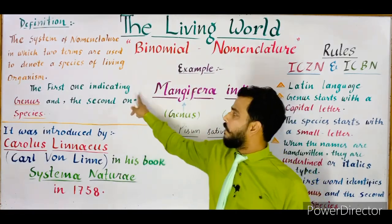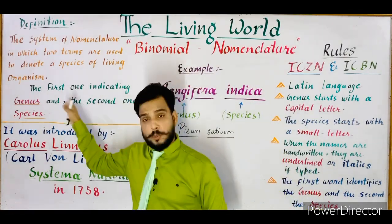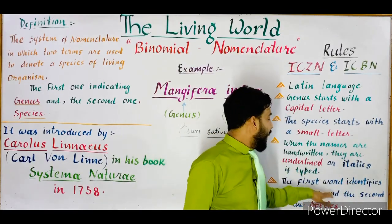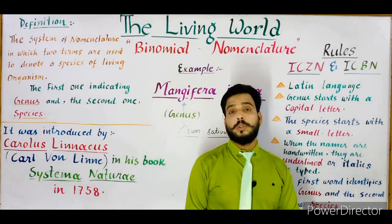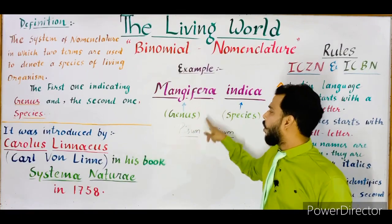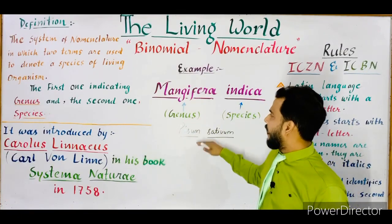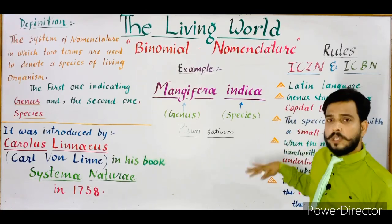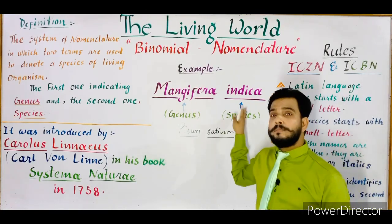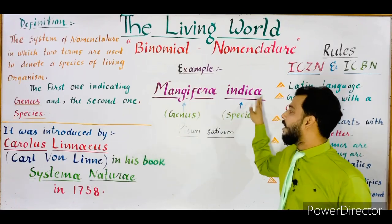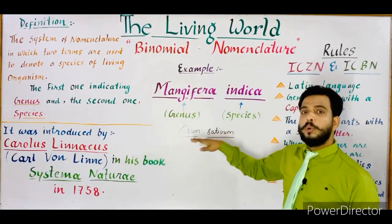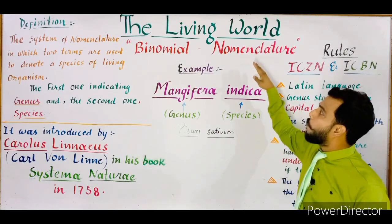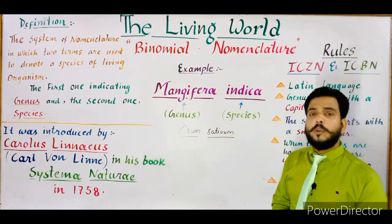The next rule is that the first word identifies the genus and the second identifies the species. So in Mangifera indica or Pisum sativum, the first names Mangifera and Pisum both indicate the genus, while the second names indica and sativum indicate the species. Together these two names are collectively known as the scientific name according to binomial nomenclature.